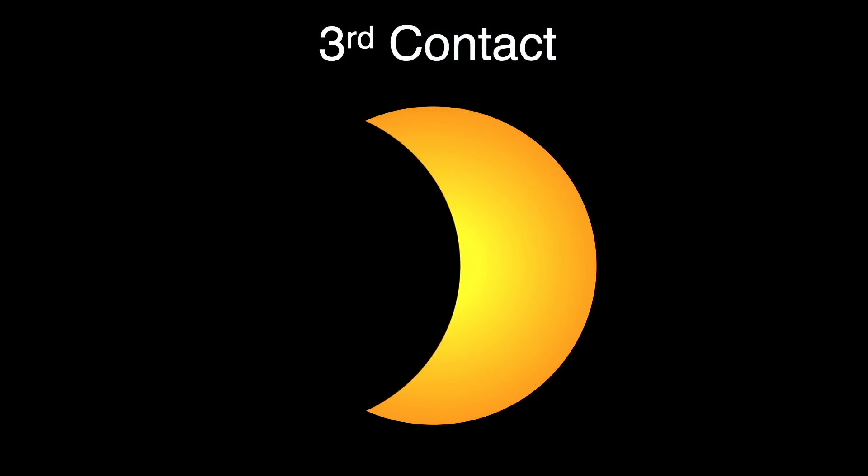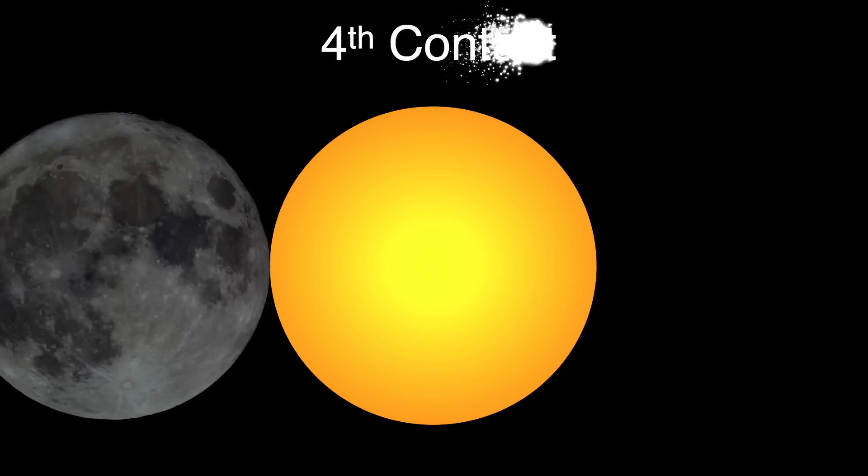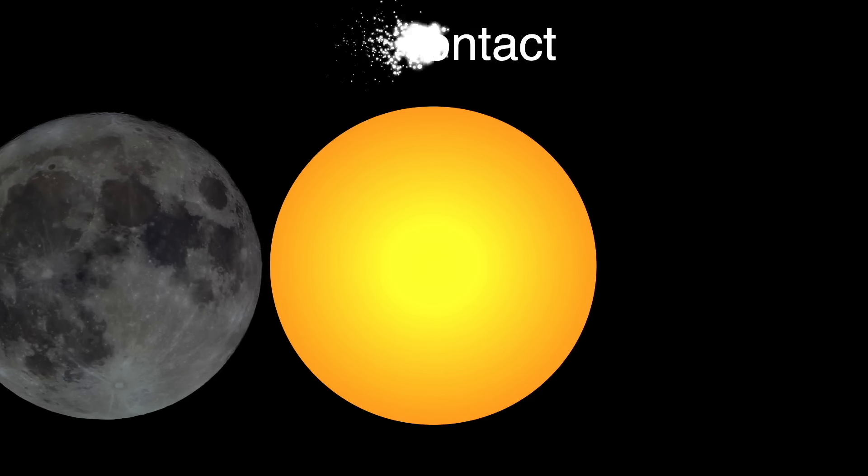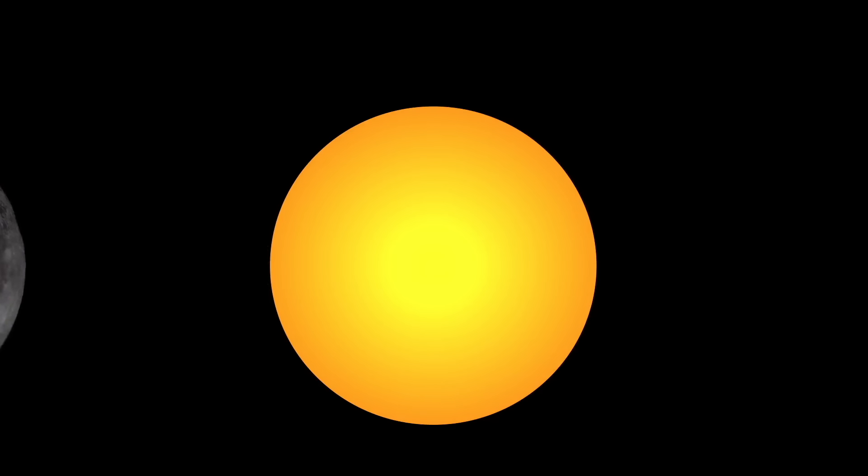Finally, we arrive at fourth contact, or C4, when the moon fully leaves the sun's surface. I've once again artificially brightened the moon to make it visible. The eclipse is officially over at this point, and the moon happily continues along its way.